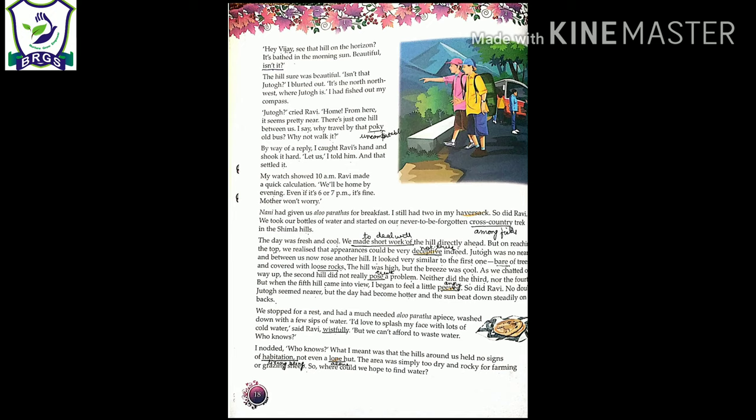'Hey Vijay, see that hill on the horizon — it's bathed in the morning sun. Beautiful, isn't it?' The narrator's brother pointed to a beautiful hill shining in the morning light. The narrator replied: 'Isn't that Jatog? It's to the northwest.' He fished out his compass — an instrument used to check directions — and confirmed it was Jatog, their hometown beyond that hill.